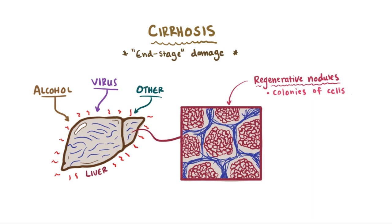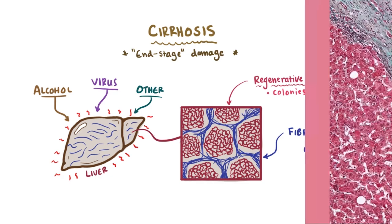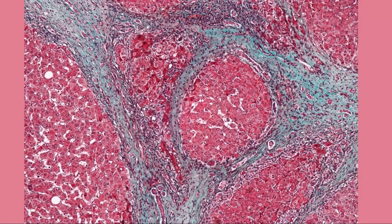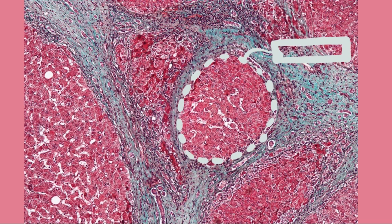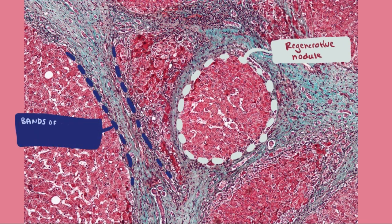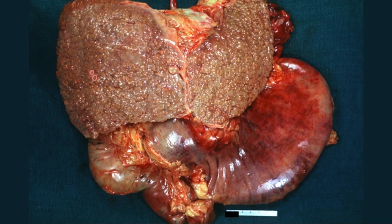With cirrhotic liver tissue, you'll see that in between these clumps of cells, or nodules, is fibrotic tissue and collagen. Here's a classic histology image of cirrhotic tissue. This clump of cells in the middle is the regenerative nodule, and these blue stains surrounding it are the bands of protein from the process of fibrosis. If we zoom out and look at it with the naked eye, we'll again see these nodules with fibrotic protein bands in between.